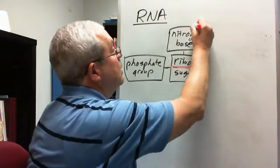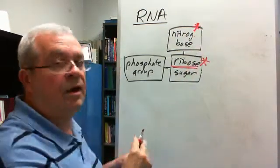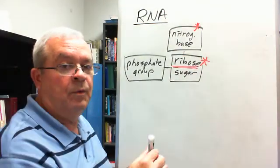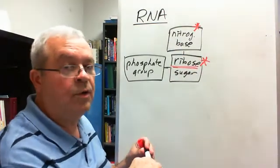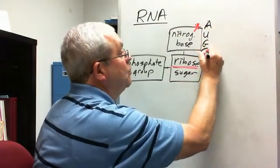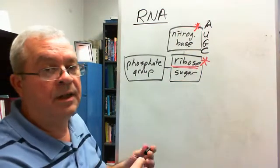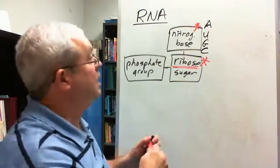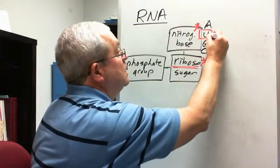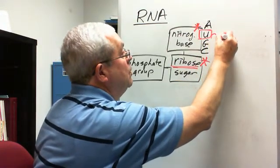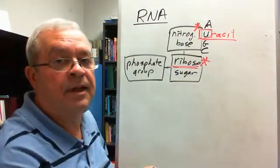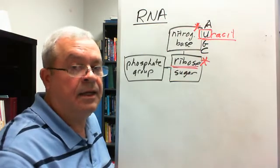And then the nitrogenous base, there's a difference here. Now with DNA, we are at the golf course, right? With RNA, we're not just at any old golf course. We are specifically at the university golf course, and so there's one of these that is obviously different. It's this U here. That's the different one. And U stands for uracil. Uracil instead of thymine in DNA.